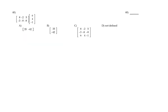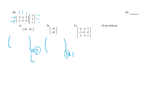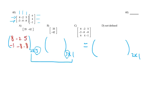Another matrix multiplication problem. The order of the first matrix is 2 rows by 3 columns, and the order of the second is 3 by 1. Since the inner numbers match, I can multiply them and the answer will be a 2×1 matrix. The first matrix contains: 8, negative 2, 5; negative 3, negative 8, negative 8. The second is: 6, 4, negative 1. Let's multiply — first row by the column: 8 times 6 is 48.